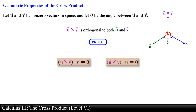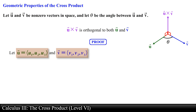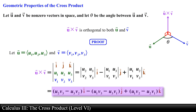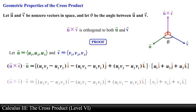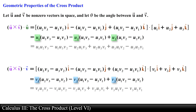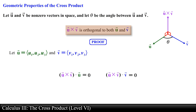We first denote the vectors in component form, then find the cross product between vector u and vector v, obtaining the resulting vector. Next we dot this vector with vector u and vector v separately, distribute the components, and notice that every single value cancels out, reducing both expressions to zero. Therefore vector u crossed with vector v is orthogonal to both vector u and vector v. This ends the proof.